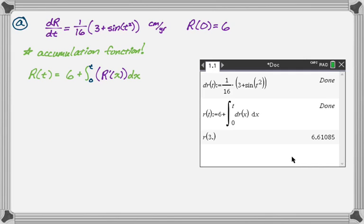It says done. Then I define the function r(t), and we'll just work with that. Then I had it find r(3). I got a decimal in case it was going to try to give me some crazy exact value, which I don't think it would be able to in this case. So r(3) is approximately 6.611. The units on that would have been centimeters.